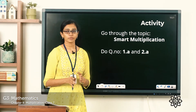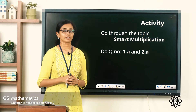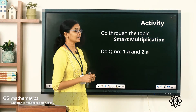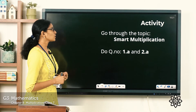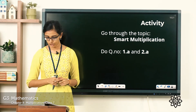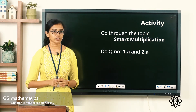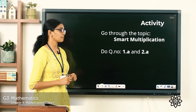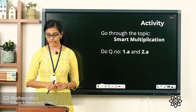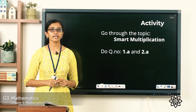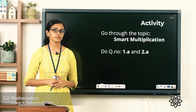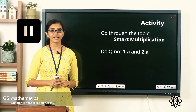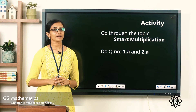So we learned two different methods of multiplication, different from the methods we learned earlier. You can go through the topic 'smart multiplication' on page 61 of your textbook. Once you have done that, please do question number 1a and 2a of exercise 4.5 on the same page. You can pause the video, do the activity, and come back.